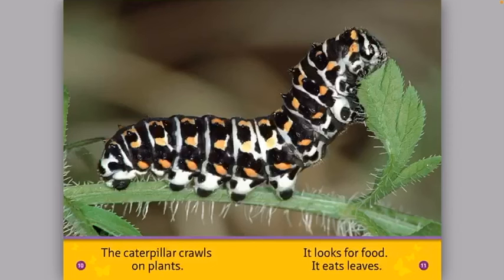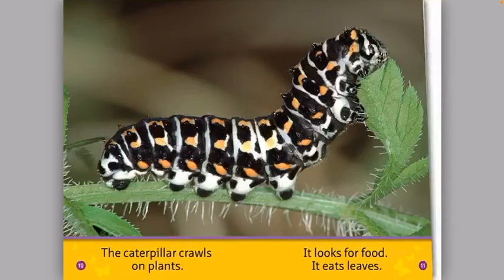The caterpillar crawls on plants. It looks for food. It eats leaves. The caterpillar grows bigger. It turns green.